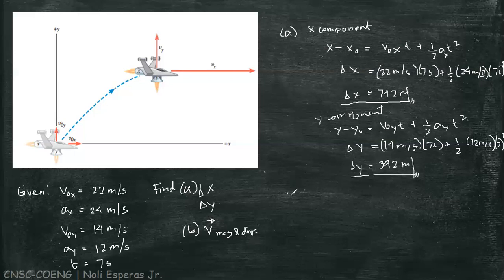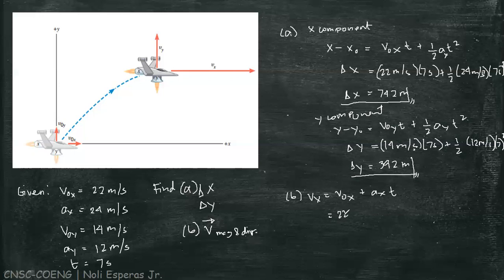For part (b), we are looking for the final velocity. To solve for this, we first find the components Vx and Vy. To solve for Vx, we use the equation Vx equals v0x plus ax·t, which equals 22 meters per second plus 24 times 7, giving us a final Vx of 190 meters per second.